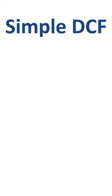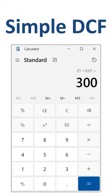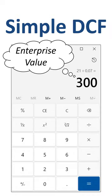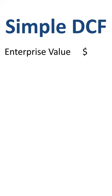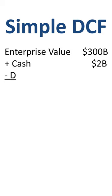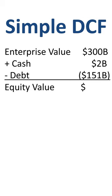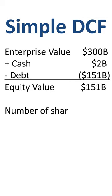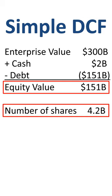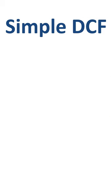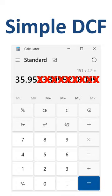In that case, you can divide $21 billion by 0.07 to get to an enterprise value of $300 billion. Enterprise value plus cash minus debt gets you to equity value. Equity value divided by the number of shares is a DCF target share price of $36.